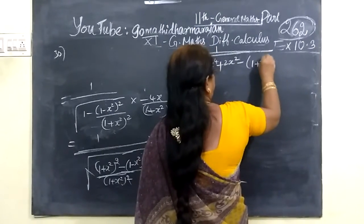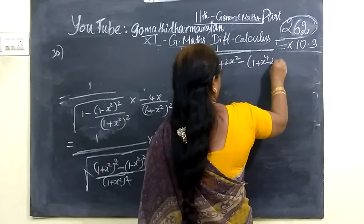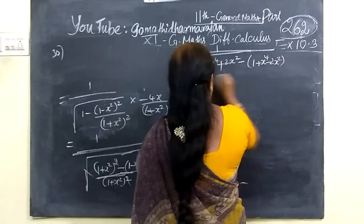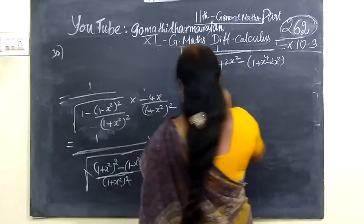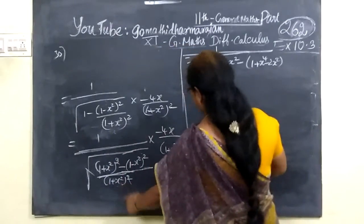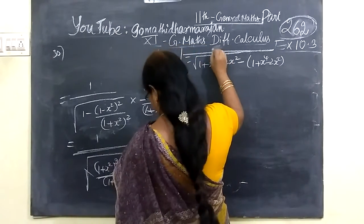1 plus x to the power 4 minus 2x squared — expanding the squares — so 1 plus x to the power 4 minus 2x squared.